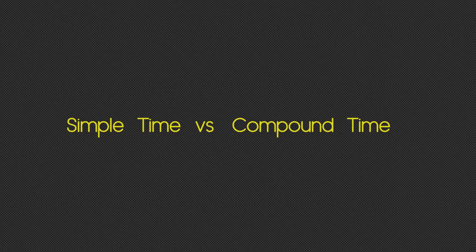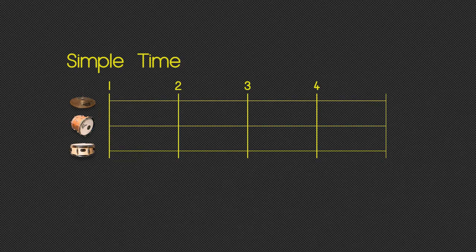In order to understand the difference between simple and compound time, we're going to start off with simple time. We'll take a 4/4 bar and add a hi-hat to each beat of the bar, getting something like this: 1, 2, 3, 4.